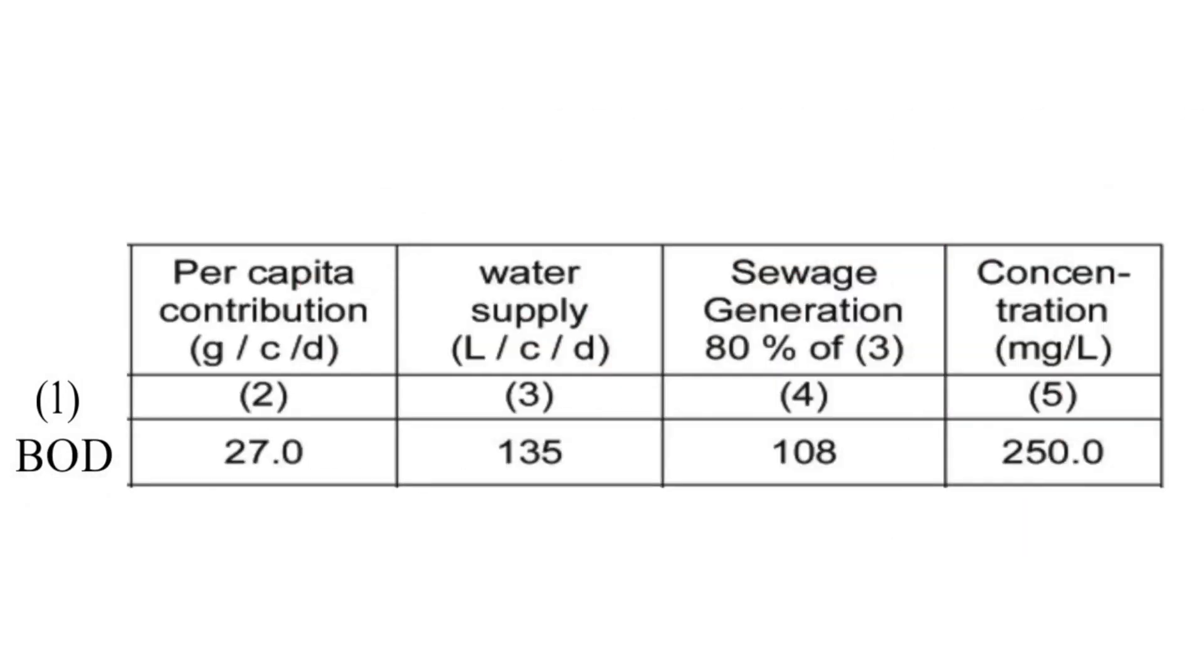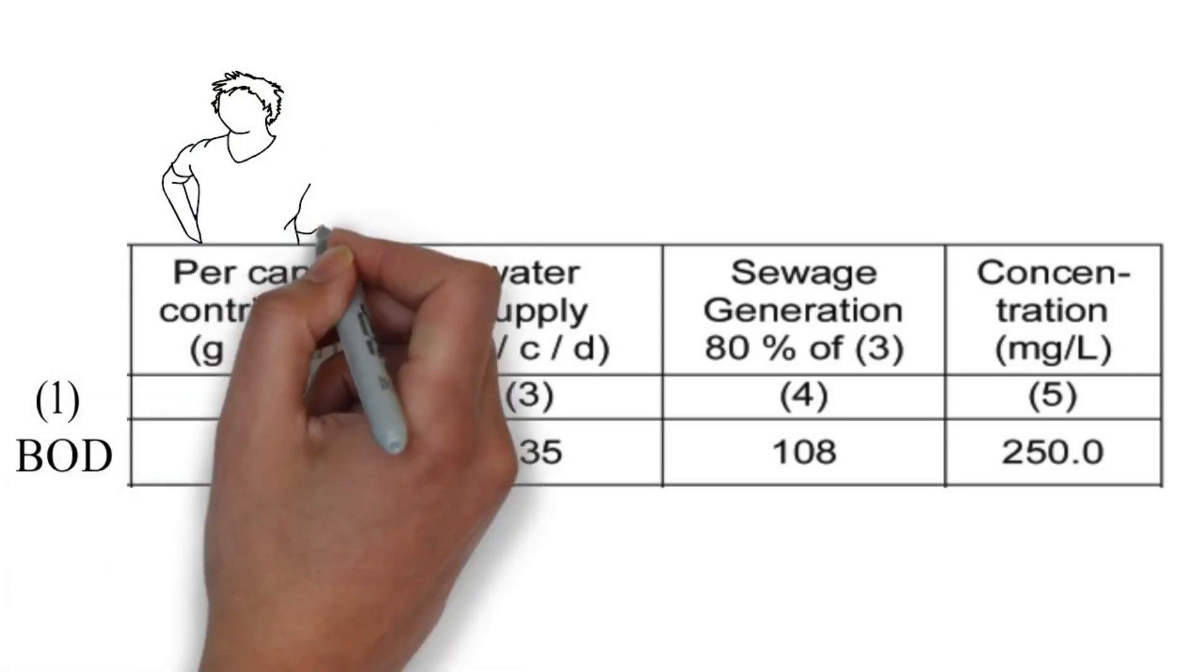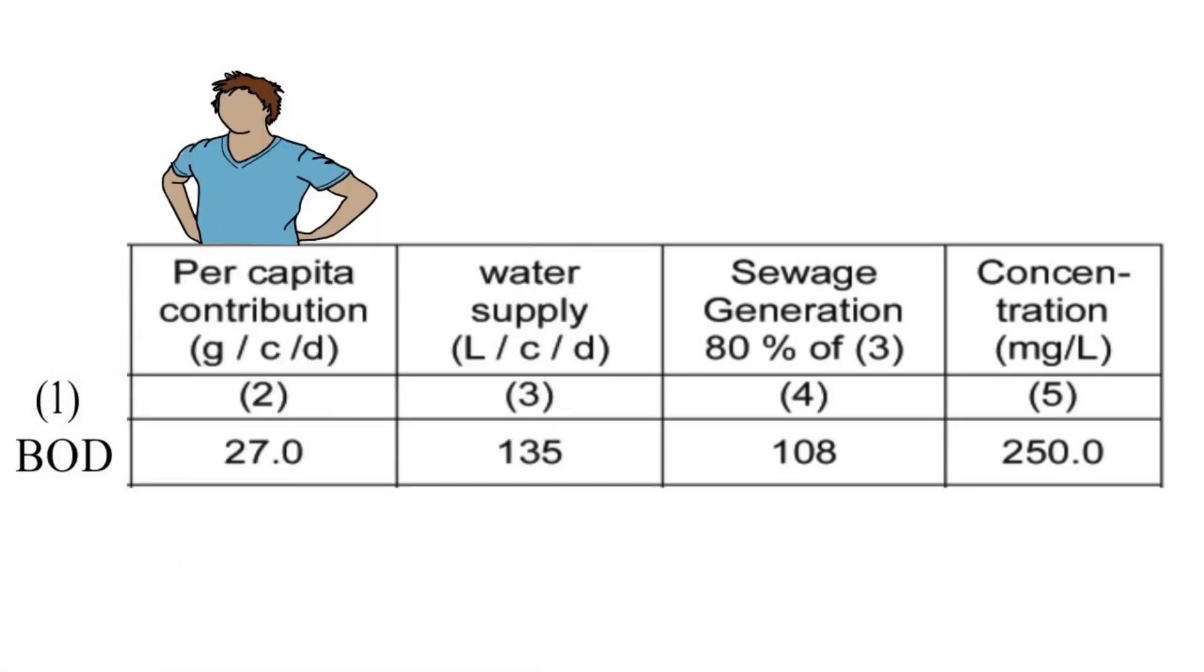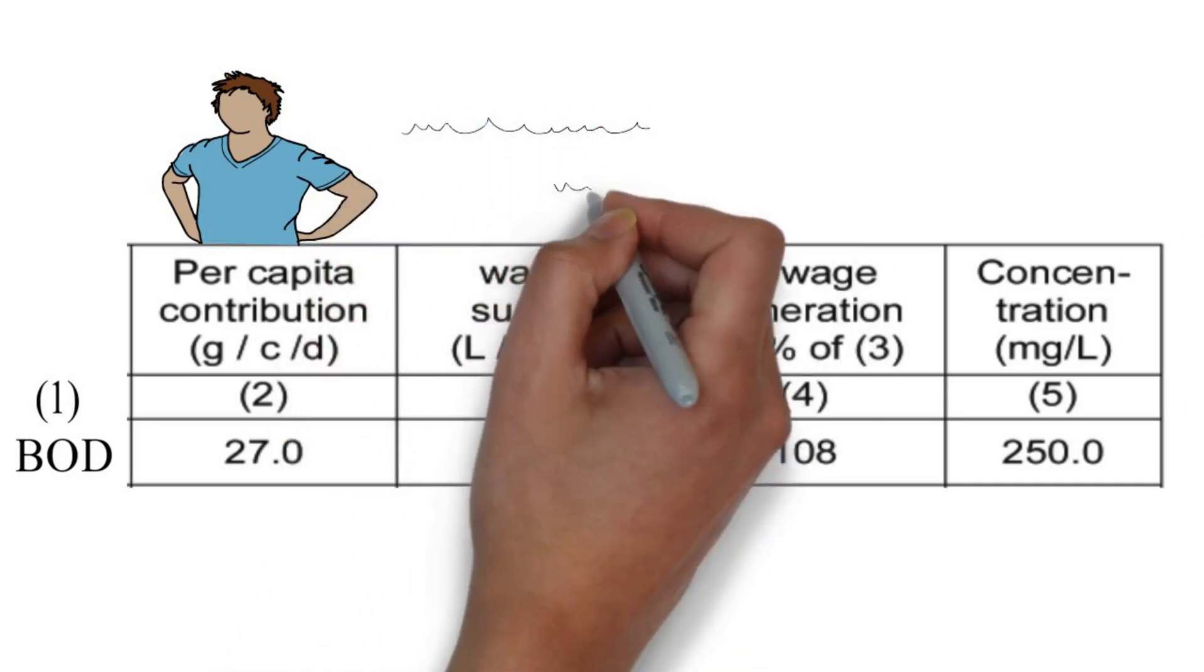If we talk about per capita contribution of BOD in sewage, then as per CPHEO manual, contribution of BOD by 1 person in 1 day is 27g or 27 multiplied by 1000, that is 27,000 mg, and per capita per day water supply is 135 litre.